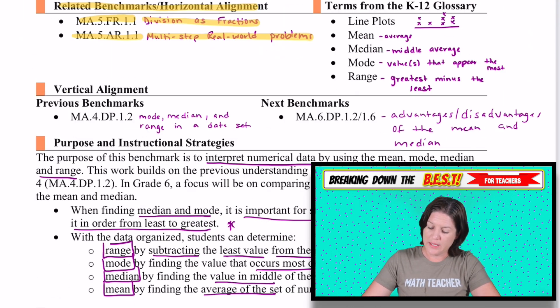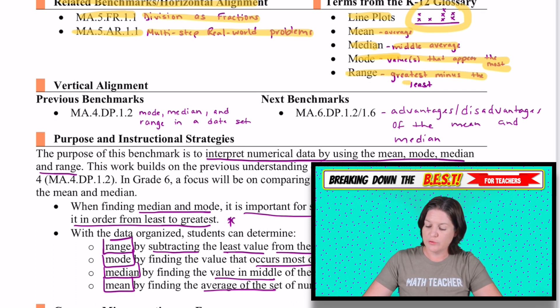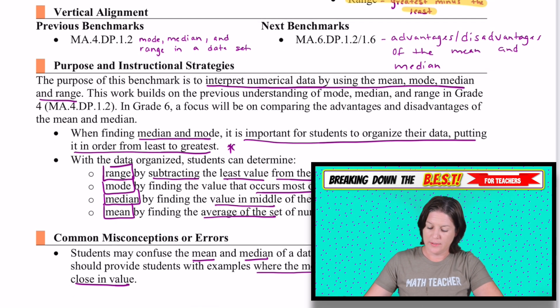Some terms that you need to know. We've got line plot, which looks kind of like this over here. The mean is the average. The median is the middle, the exact middle or the average of the two middles that you find. The mode, the mode is the value or values that appear the most often. And the range is when we find the greatest value minus the least value. And we subtract that to find the range. All right.